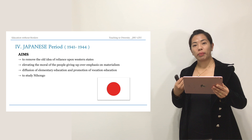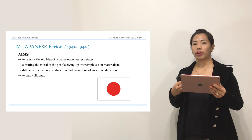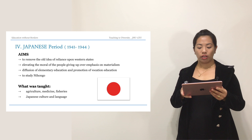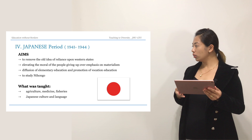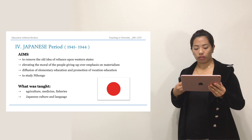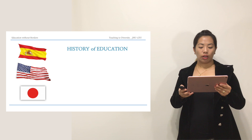Fortunately, the languages acquired from the colonizers proved very helpful for Filipinos until now. The subjects taught during the Japanese period, with their emphasis on vocational education, included agriculture, medicine, and fisheries — fisheries being important because of the geographical location of the Philippines. One important subject taught was also the use of Japanese culture and language.